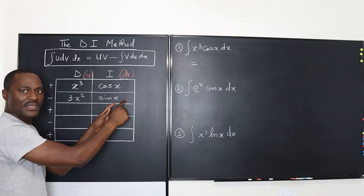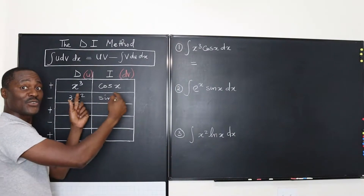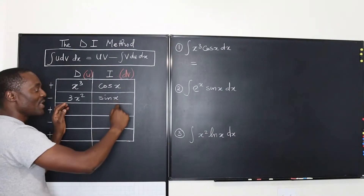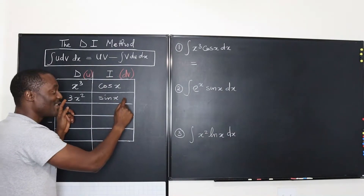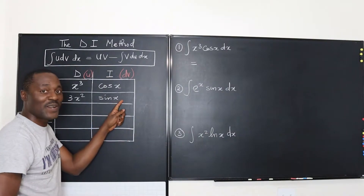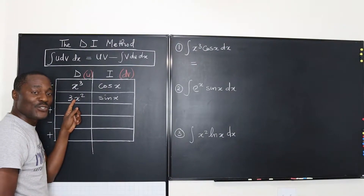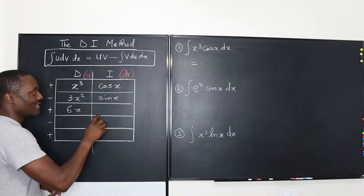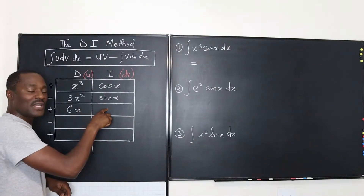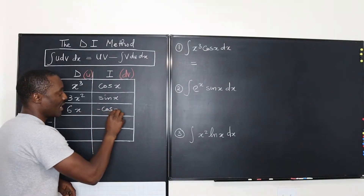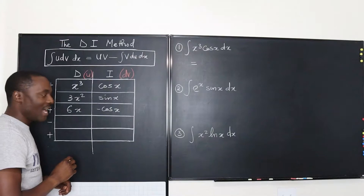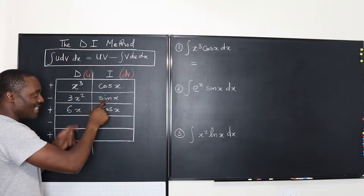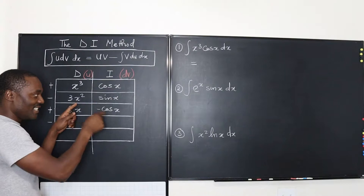Do we know how to integrate this? Well, we still have to use integration by parts again. So from here, this is going to end up becoming our dV and this is going to be our U. We still need to differentiate this — we're going to get 6x. And if we integrate this, we're going to get negative cosine X. So this is going to be uv and this is going to be our new uv again.